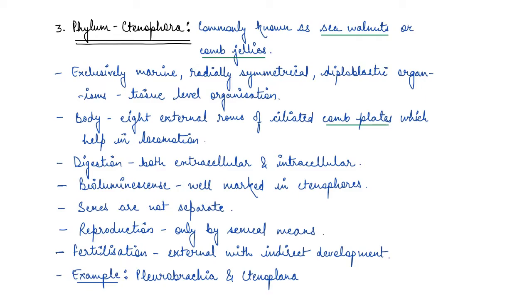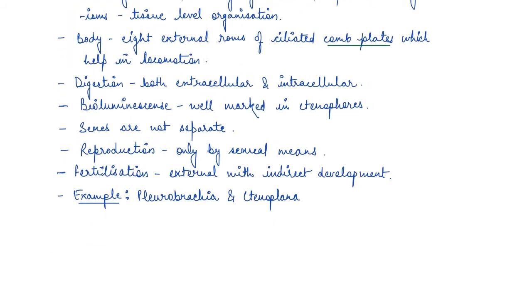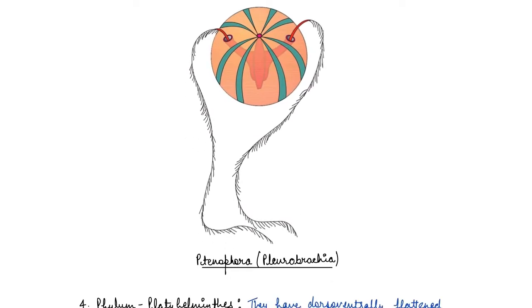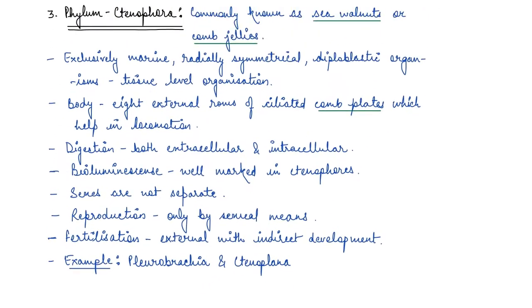Ctenophora are also known as sea walnuts or comb jellies. Why are they known as sea walnuts or comb jellies is because of their structure. If I show you their structure right now, it is round walnut-like and then they have combs. Their body is jelly-like and they have combs as you can see here. That is why they are known as sea walnuts or comb jellies.